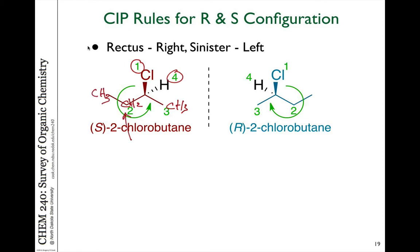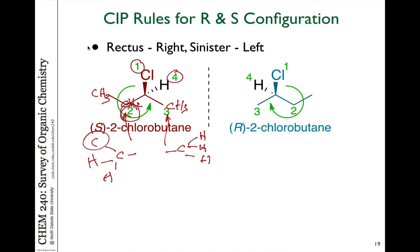We have two carbons to compare, so we need to go out further to determine priorities. This carbon is attached to three hydrogens, whereas the carbon on the left is attached to two hydrogens and one carbon. That's why this is number two and this is number three.